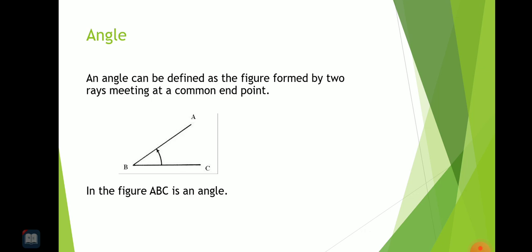An angle can be defined as the figure formed by two rays meeting at a common endpoint. Here in the figure you can see that AB and CB meet at a common endpoint that is B. So ABC is an angle.